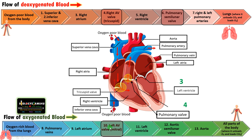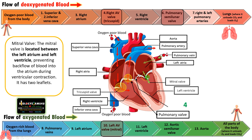The third one is the left AV valve or mitral valve, which is involved in regulating the flow of oxygenated blood. After oxygenation, blood enters into the pulmonary vein, then it enters into the left atria, and moves into the left ventricle through the mitral valve. It is located between the left atria and left ventricle. It prevents the back flow of blood into the atrium during ventricular contraction and has two leaflets.